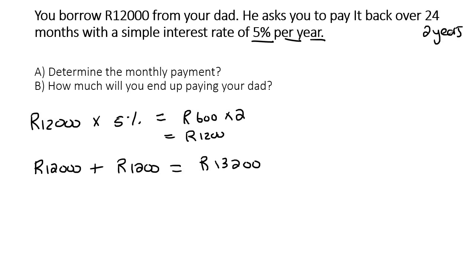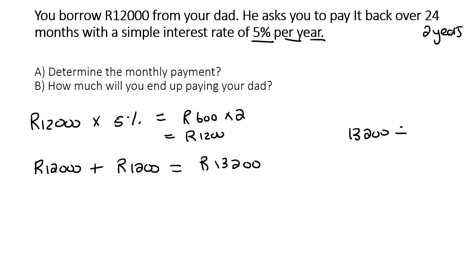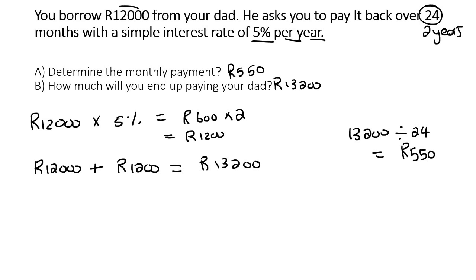So the total you'll pay your dad is 13,200 rand — that's the answer to how much money you'll end up paying. How much will your monthly payment be? You divide 13,200 by 24 months, and so you end up with 550 rand per month. That is the monthly amount you would pay your dad. Your dad gave you 12,000 rand, but because you're borrowing money, you're going to normally have to pay back more — and so that is what you're going to end up paying back to your dad.